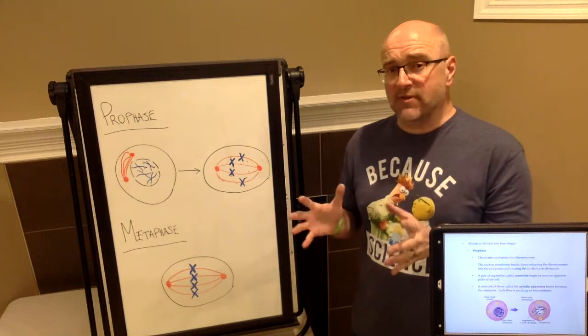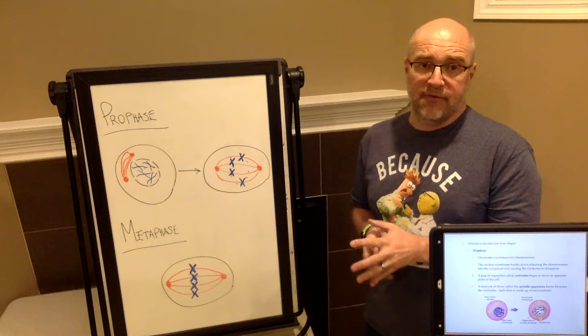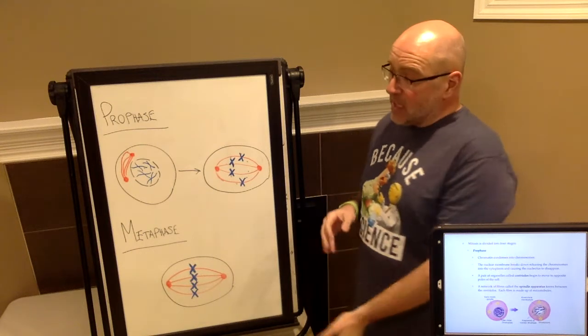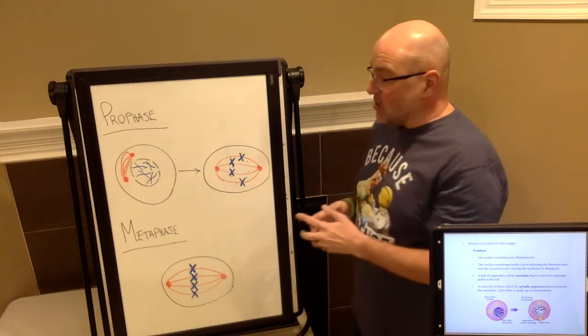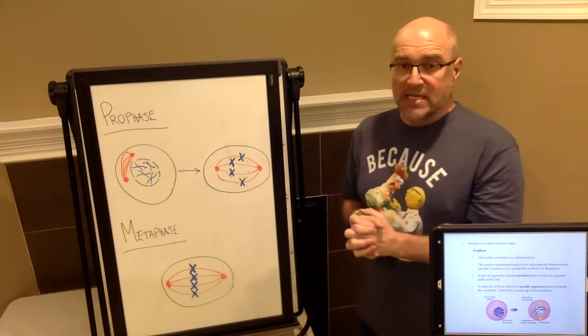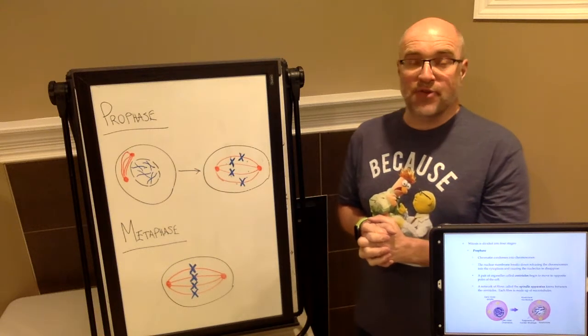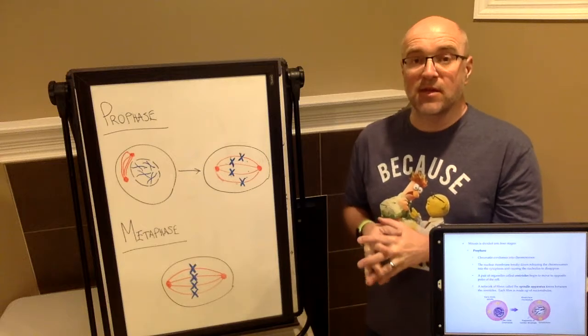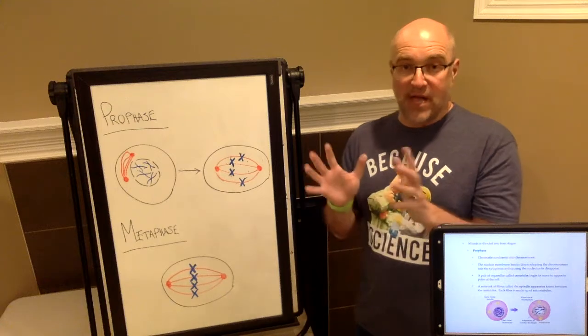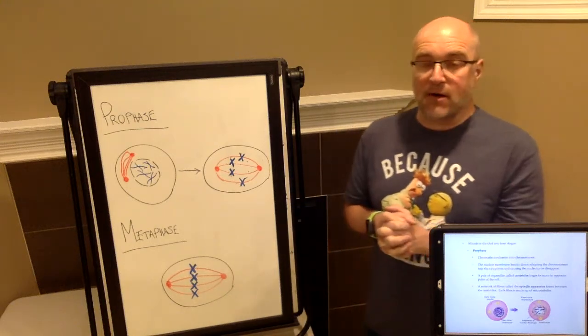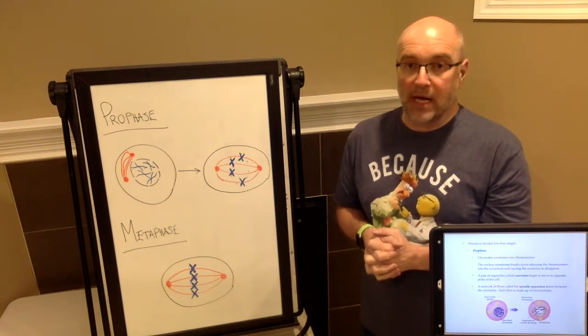And then the actual division of the cell is called cytokinesis. So up on the board here, I've got the first two phases of mitosis ready to go. I just want to tell you about the color coding. Your cell membranes and nuclear membranes are in black. The DNA is going to be in blue on these diagrams, and the centrals and the spindle apparatus are going to be colored red.